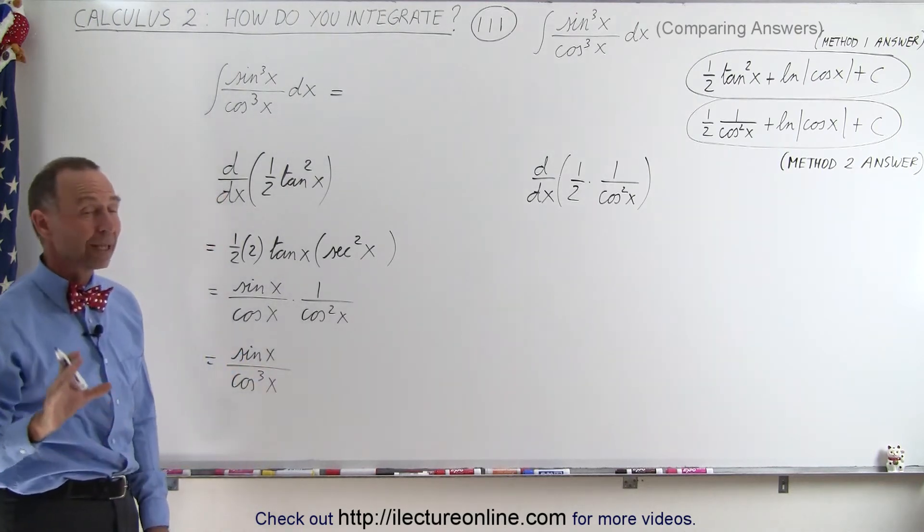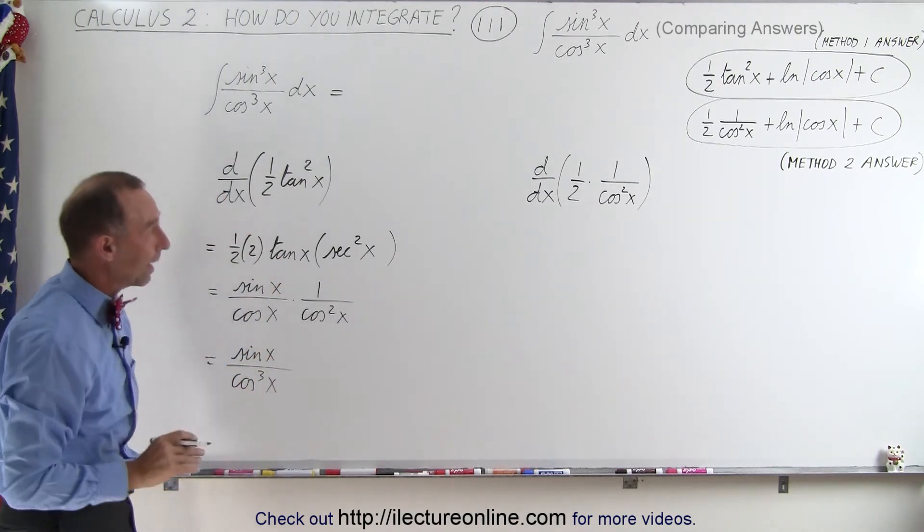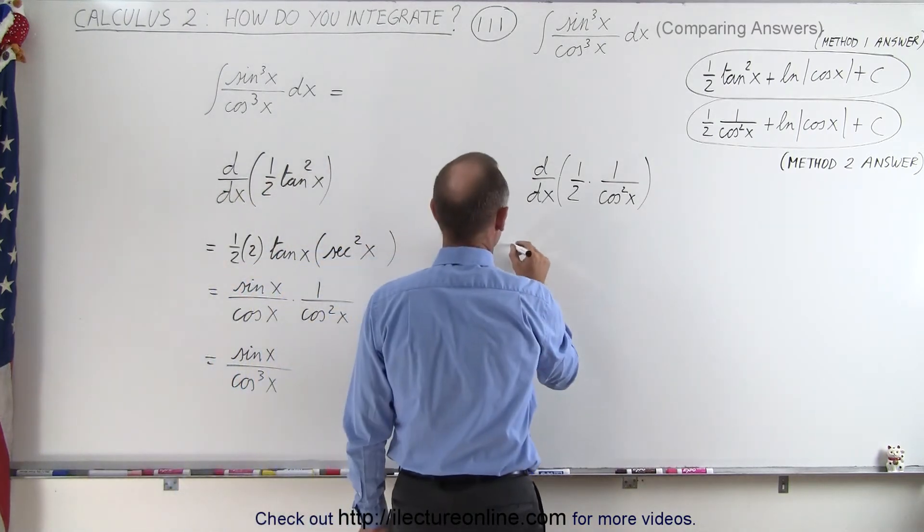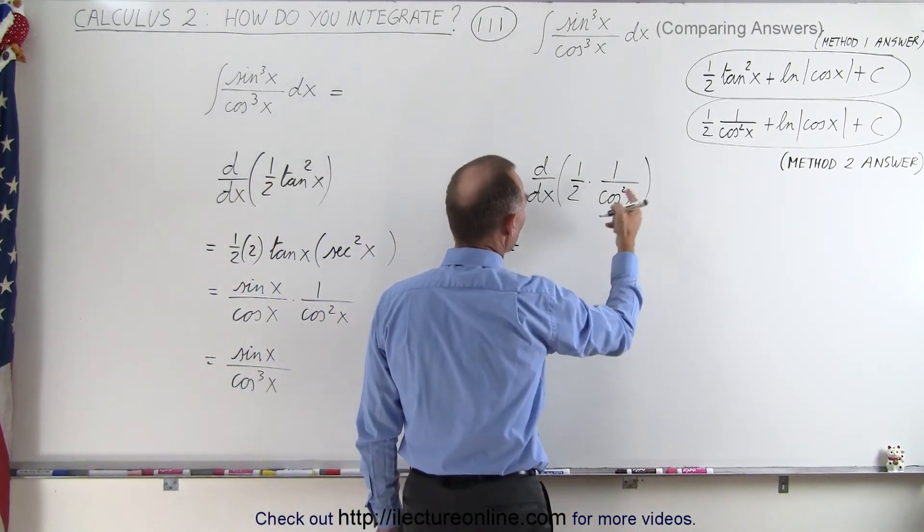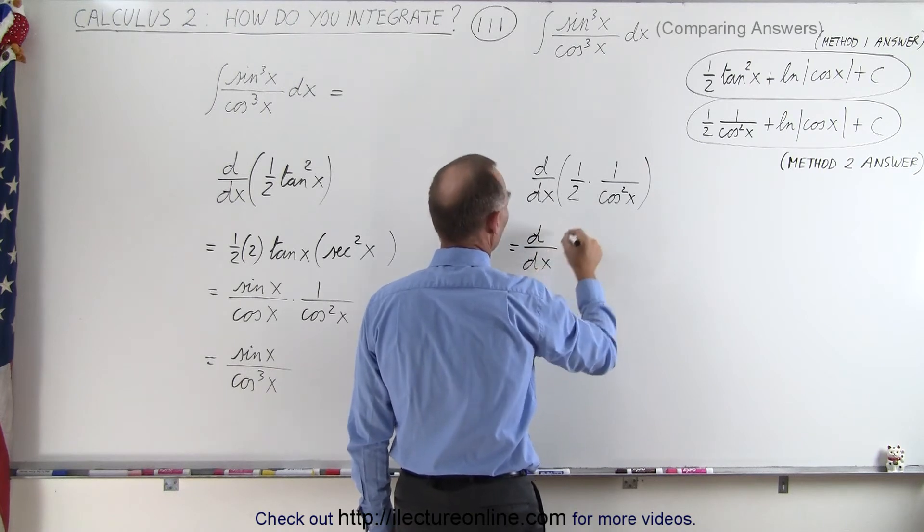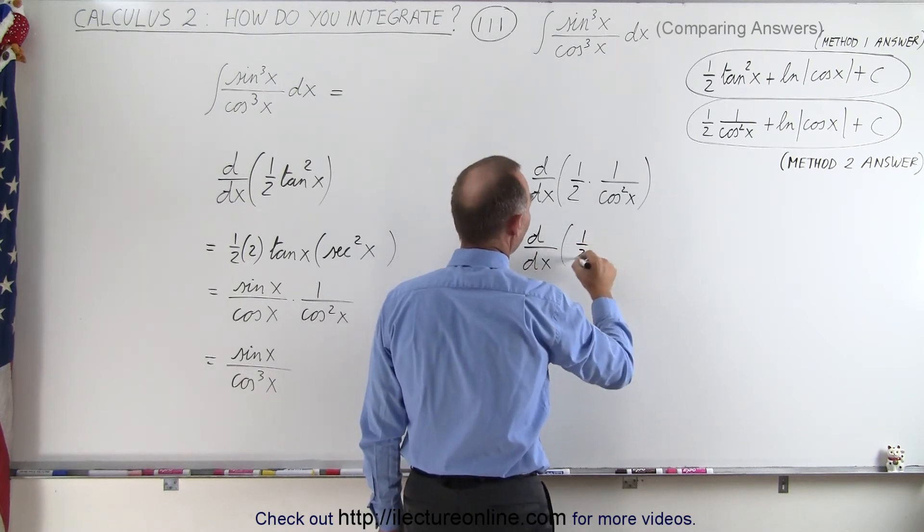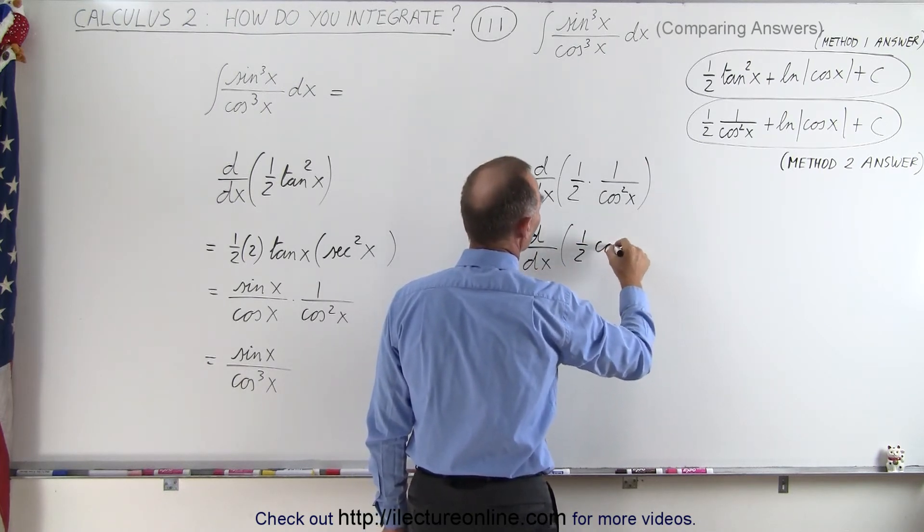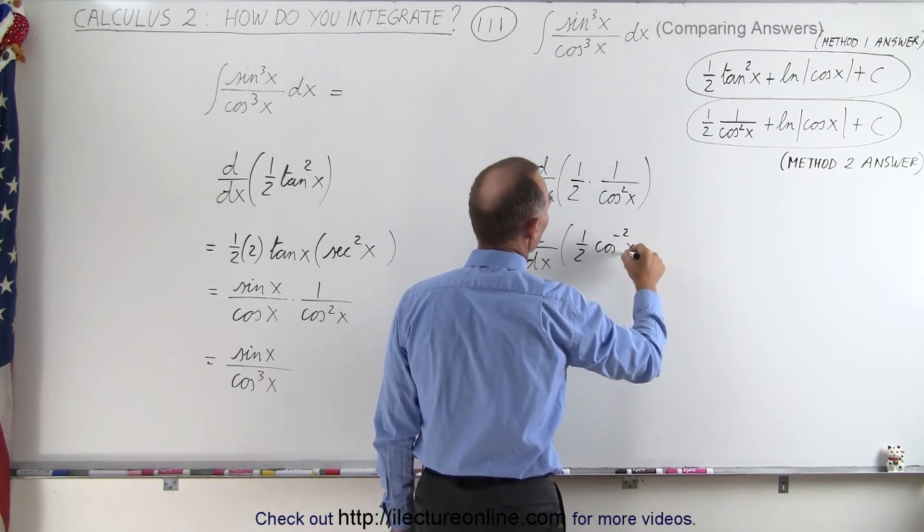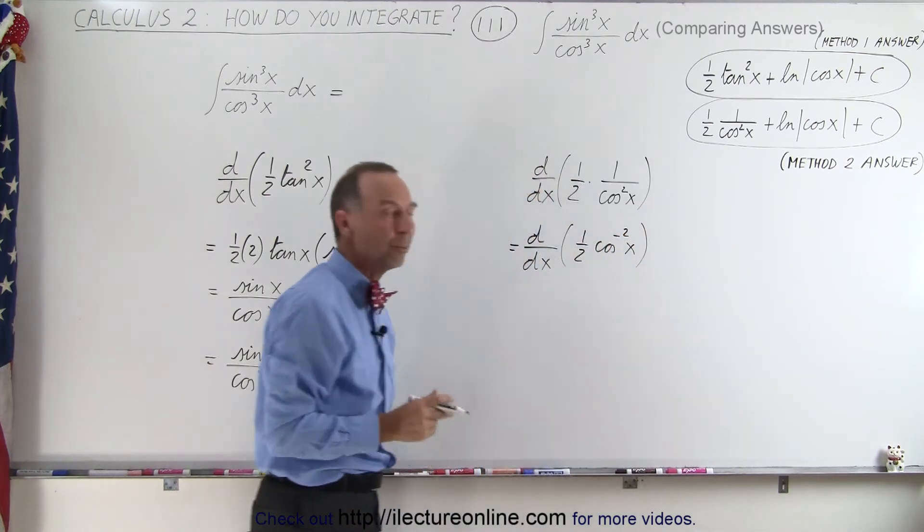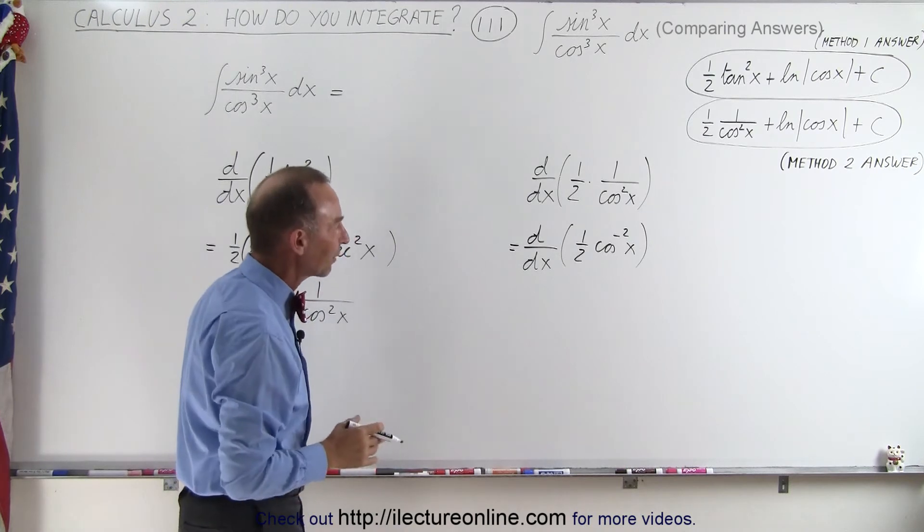All right now let's see if we get the same thing when we take the derivative of that. And so this is equal to, I'm going to rewrite this, we're going to write this as the d dx of one half times the cosine to the negative two power of x. So we bring it to the numerator and make that into a negative exponent.